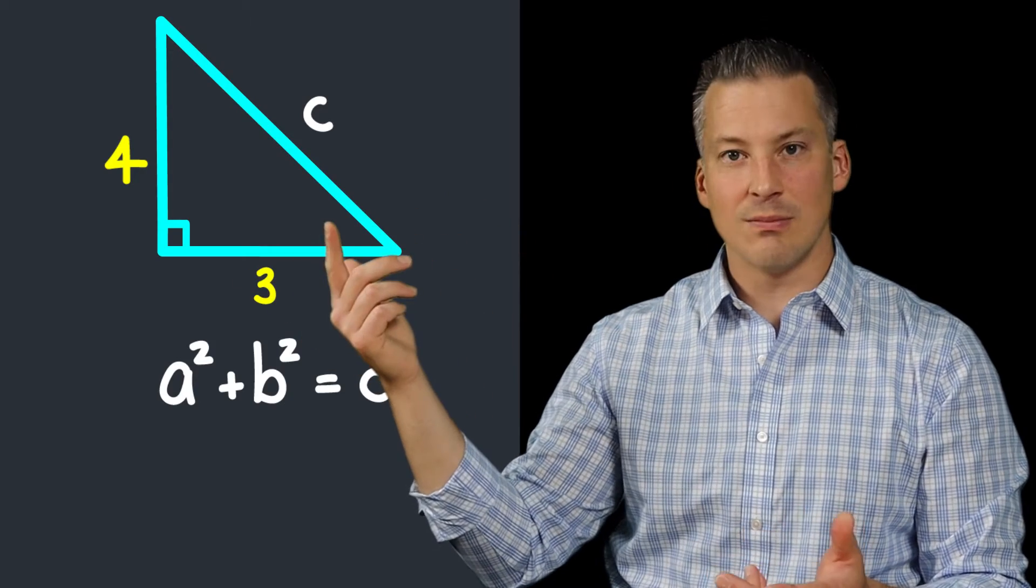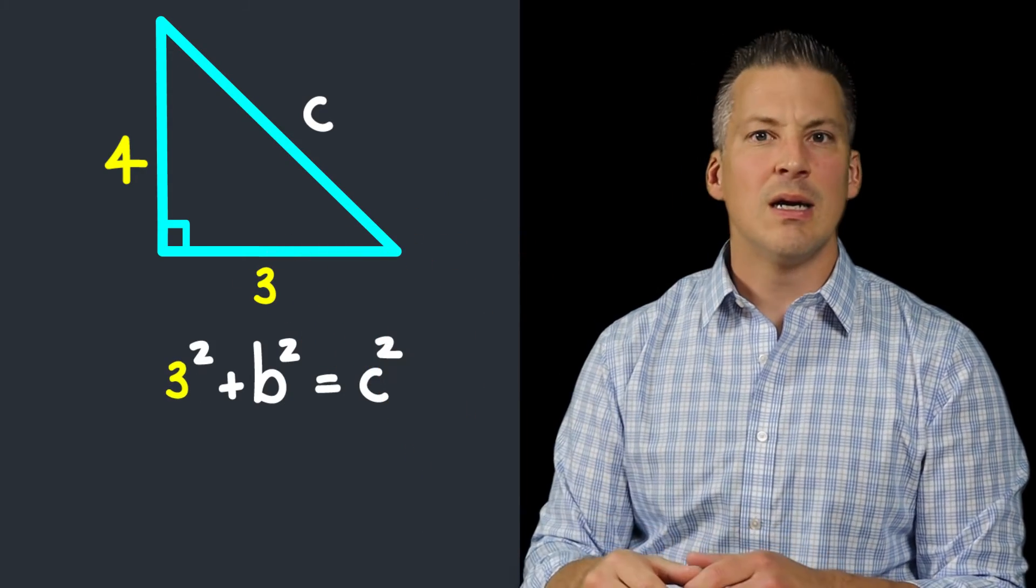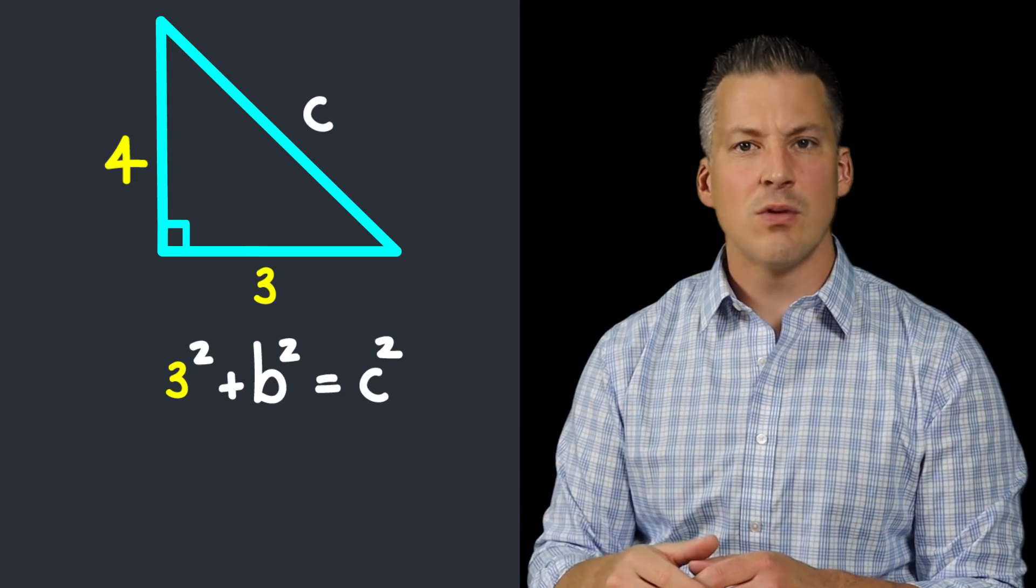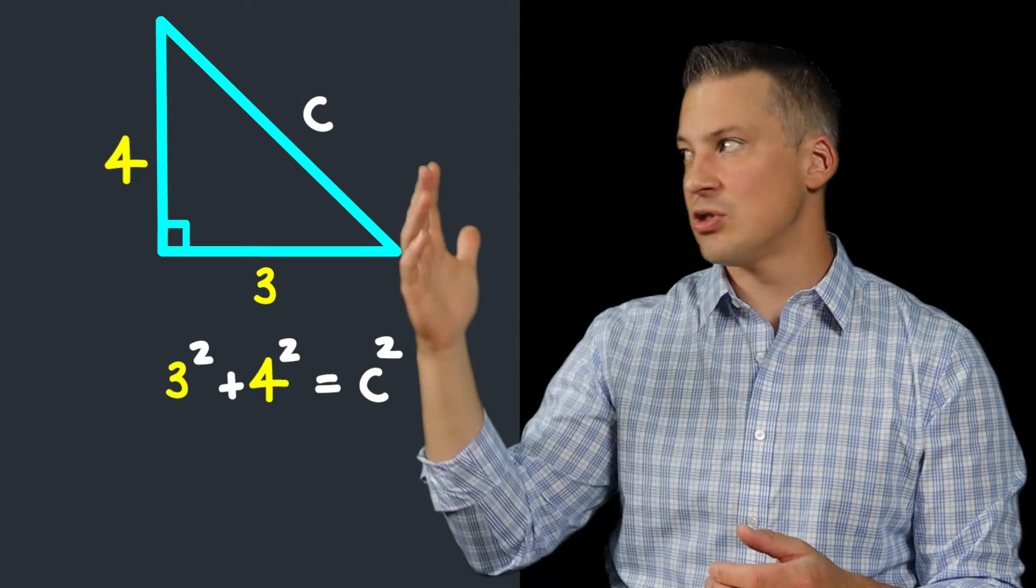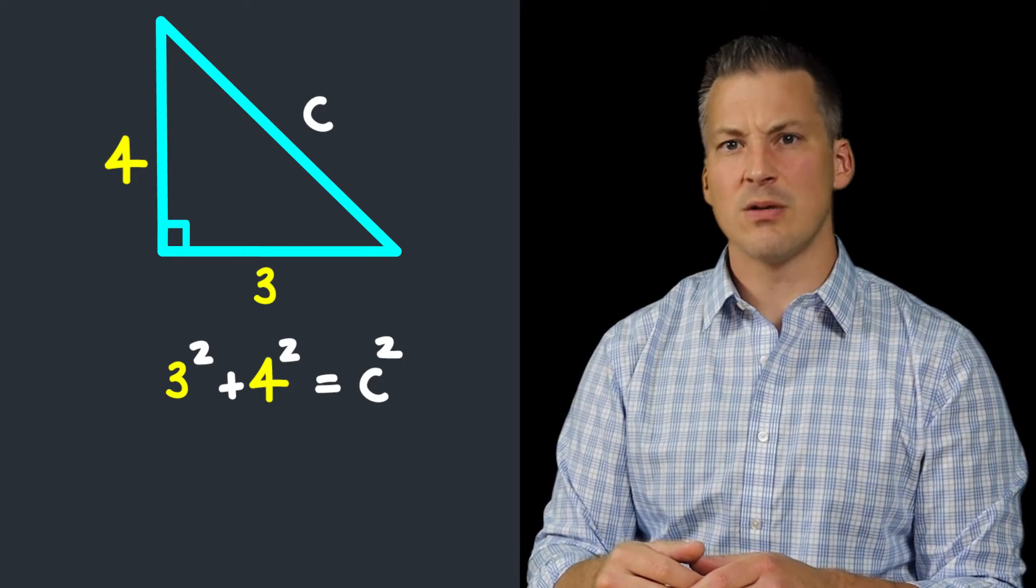So let's say for a, that's the length of 3, so we plug it in. Let's say that b is then the length of 4, so we plug that in. And then that's going to equal c², which is just representing the hypotenuse.